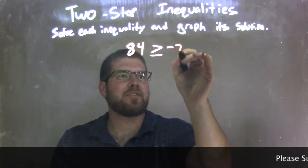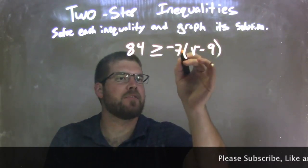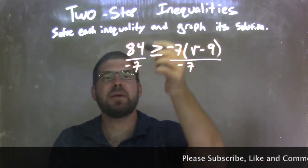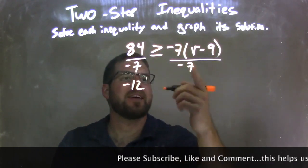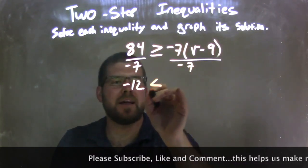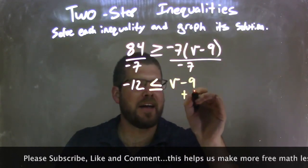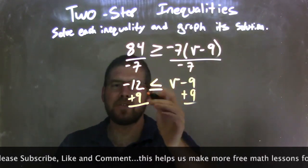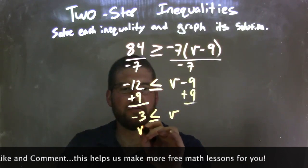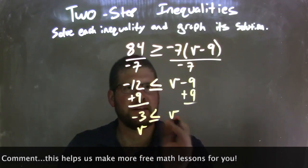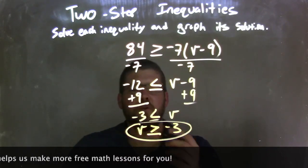84 is greater than or equal to negative 7 times (b minus 9). My first step: divide both sides by negative 7. 84 divided by negative 7 is negative 12 — 84 divided by 7 is 12, and positive divided by negative is negative. Since I divided over the inequality by a negative number, I flip the sign from greater than or equal to, to less than or equal to. I'm left with b minus 9 on the right. Then I add 9 to both sides: negative 12 plus 9 is negative 3, which is less than or equal to b. Rewriting with b first — and flipping the inequality back — b is greater than or equal to negative 3.